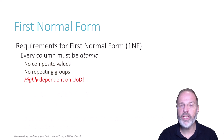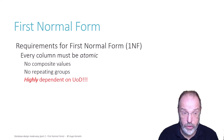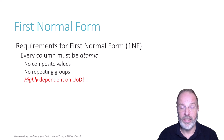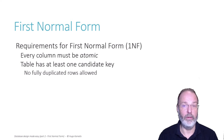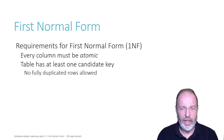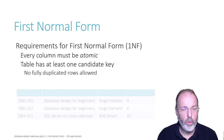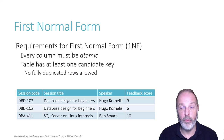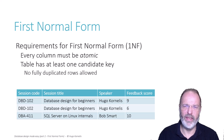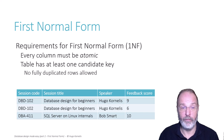Bottom line: every column must be atomic, and that is highly dependent on the universe of discourse. That was just the first requirement for first normal form. The second requirement is that every table must have at least one candidate key — in other words, fully duplicated rows are not allowed. Let's return to the conference. Let's design a table for the schedule and also add the feedback score that attendees give to a session after attending it. So my session Database Design for Beginners has attracted two feedback forms — a score of 9 out of 10 and a score of 6 out of 10.